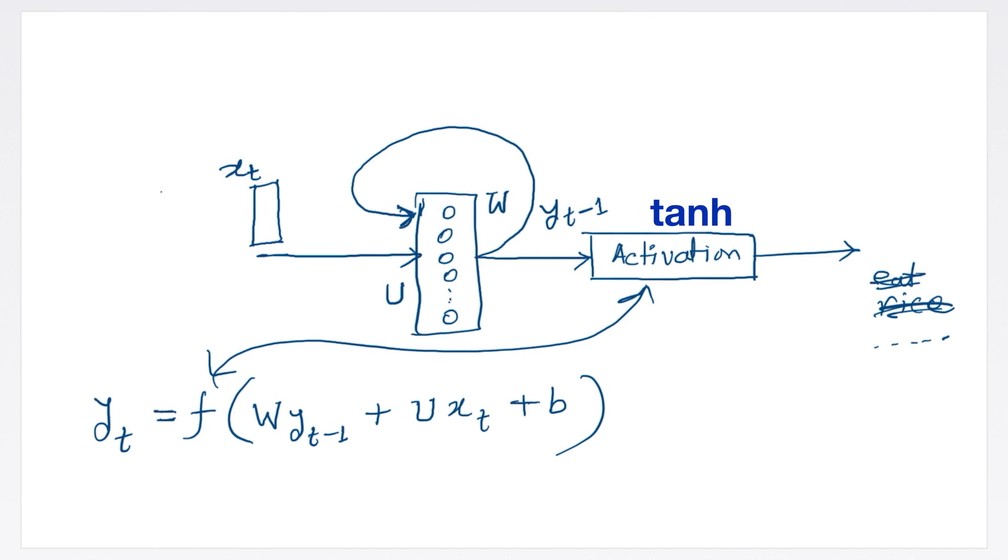While processing a single sequence in a recurrent neural network, the weights W, U and the bias term B remain constant for the sequence. The parameters U, W and B are typically updated via backpropagation after processing a sequence of data.